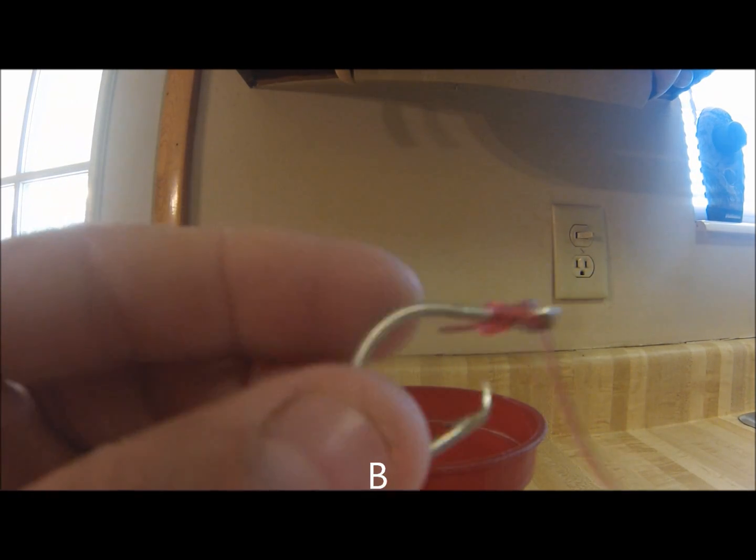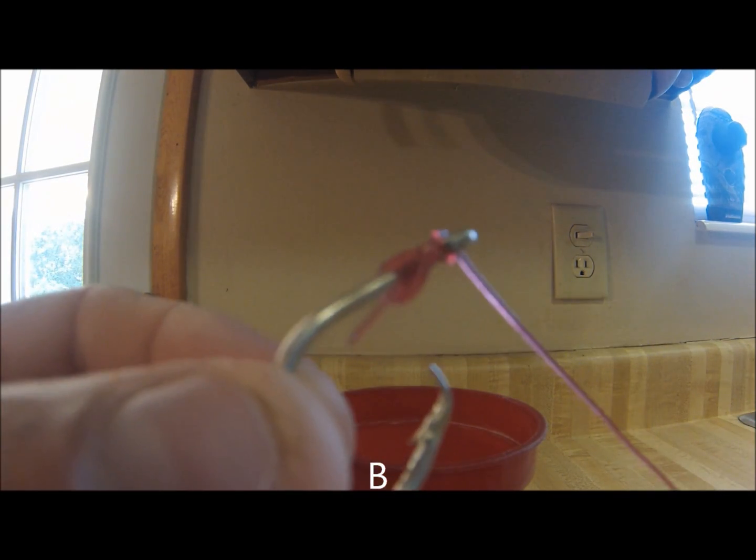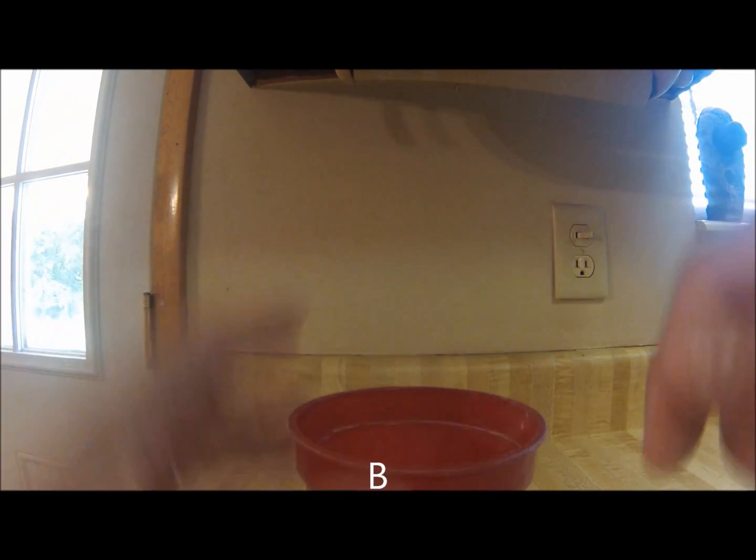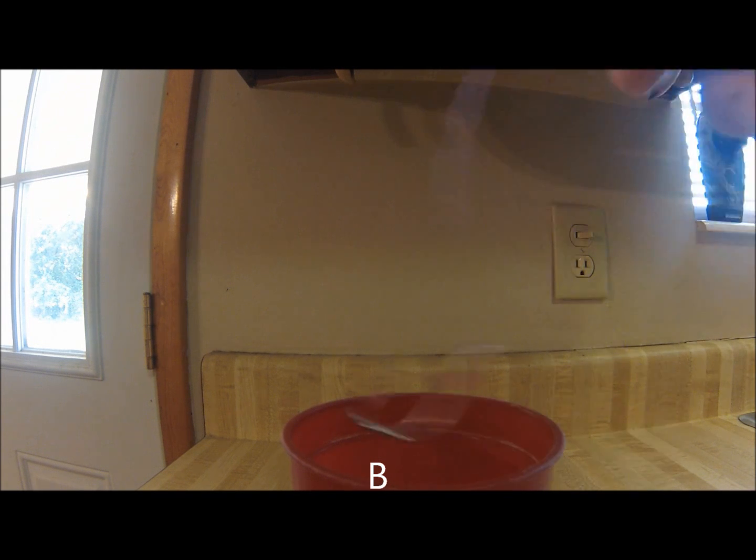Hook B is our properly snelled circle hook. The line comes through the front of the eye. This allows the circle hook to make a complete circle as it rolls up in the fish's mouth. Testing results in consistent hook ups: 1 hook up, 2 hook ups, 3 hook ups, 4 hook ups, 5 hook ups, 6 hook ups, 7, 8, 9, and 10.